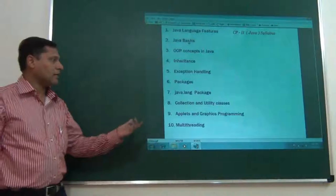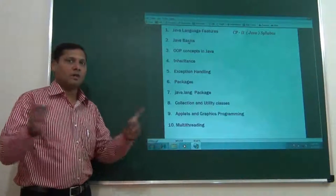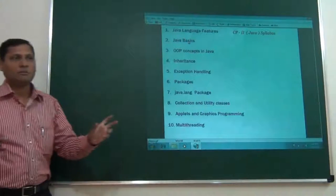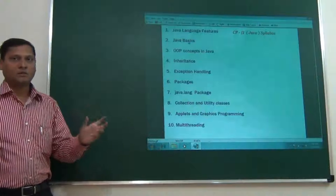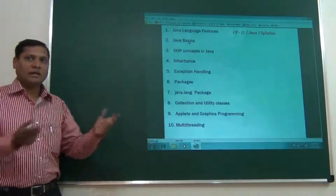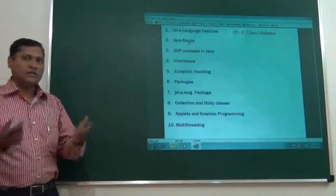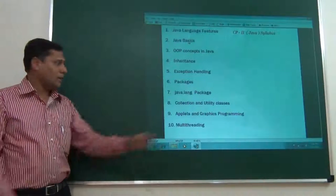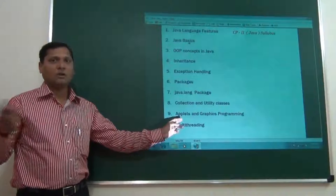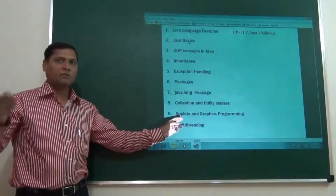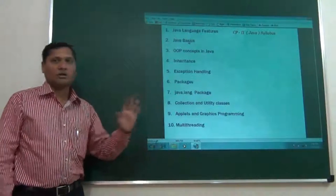Second last is applets and graphic programming. In Java, we can write two kinds of programs. First is application program, a program which can run on desktop. A normal program that we write in C++ like black and white screen, text application. Or it can be a windows application also, but that is what is a simple application programming. An applet program is a program that can run on browser. Only with the help of browser, the applet program can run or it cannot run.